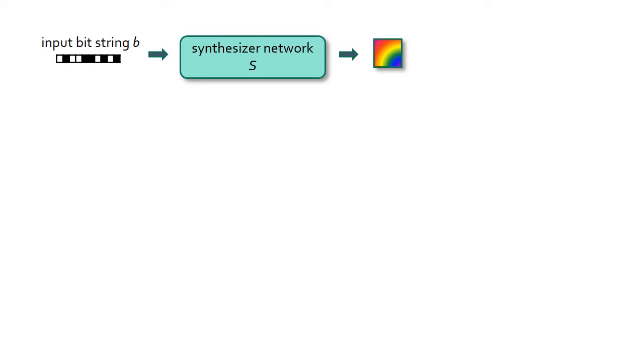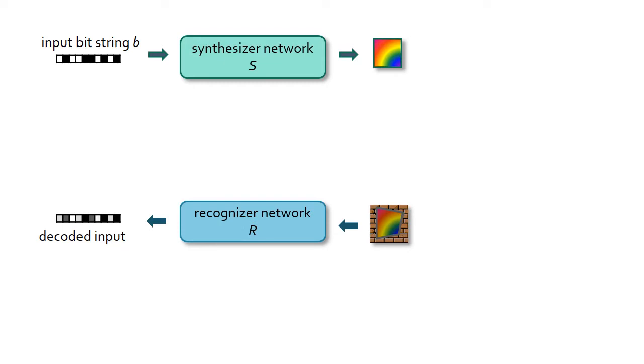Our approach also trains a recognizer network that is designed to recover the coded bit string from the visual marker. The recognizer thus reverses the action of the synthesizer, and we judge the success of the training process using a loss function that compares the input bit string and its recovered version.